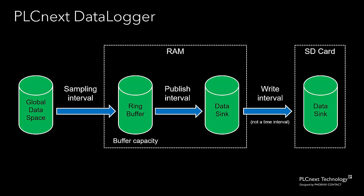But how do we choose values for these parameters? Let's take an example. If we have a sampling interval of 100 milliseconds, that means we're sampling variable data in the global data space 10 times a second and moving that data into the ring buffer. If we set the buffer capacity to 10, that means that after 10 samples are stored in the ring buffer, the oldest values will start getting overwritten with newer values. So from a time point of view, the buffer has a capacity of one second. That means we have to move data from the ring buffer into the in-memory data sync at least once a second, so our publish interval has to be less than or equal to 1000 milliseconds.